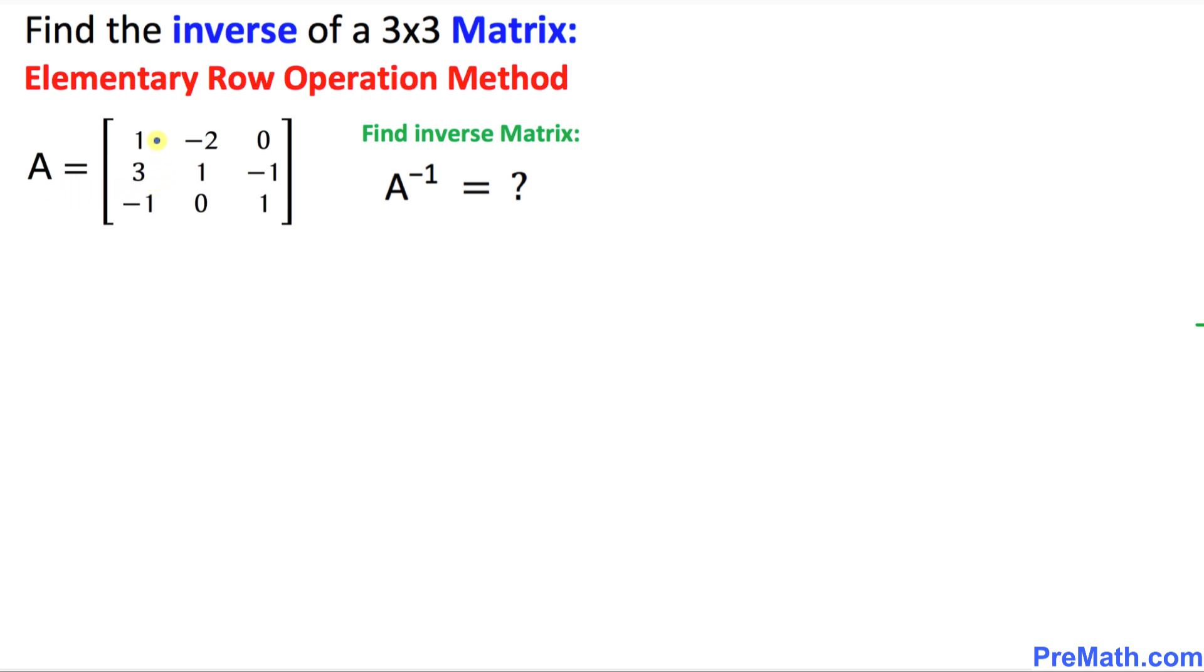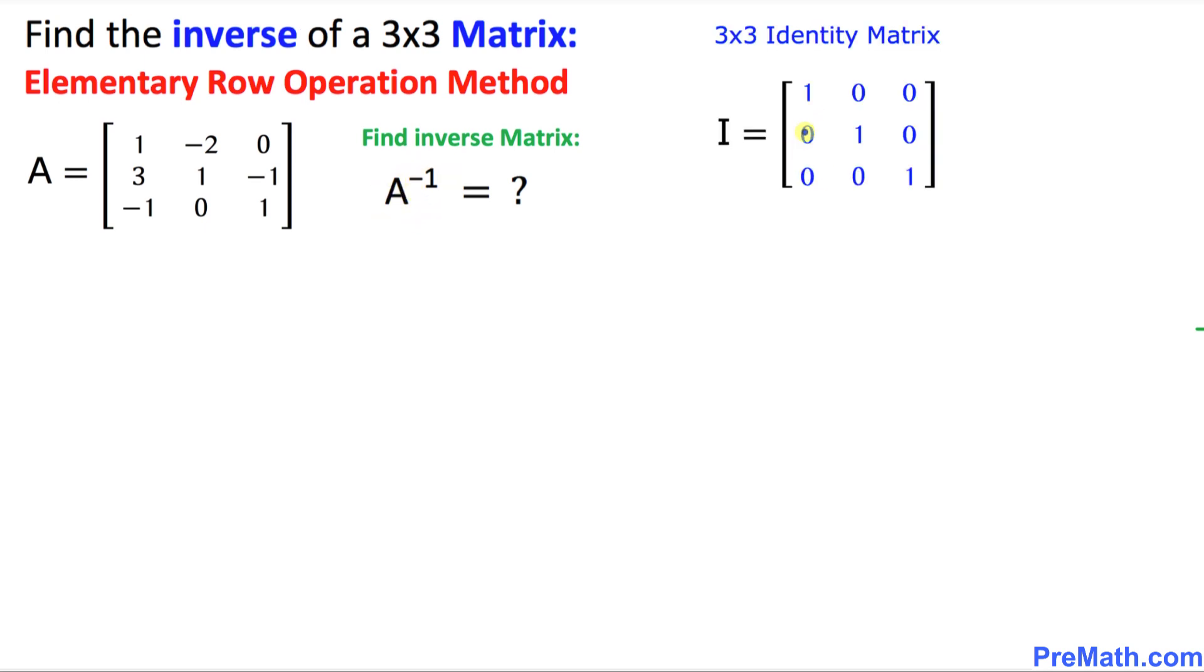our A matrix is 3 by 3, 3 rows and 3 columns, and the inverse matrix is represented by A power negative 1. And here is our 3 by 3 identity matrix represented by uppercase I.